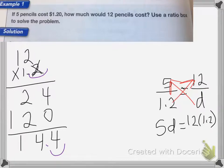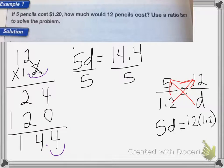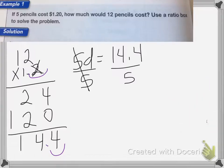So 5D equals 14.4. I'll divide both sides by 5. The 5s cancel. So D equals 14.4 divided by 5. The decimal goes straight up.